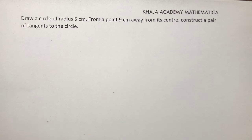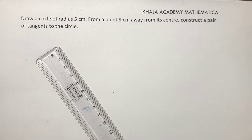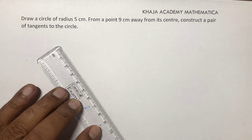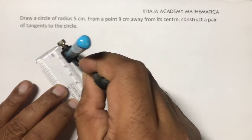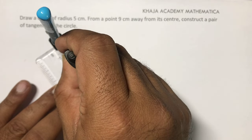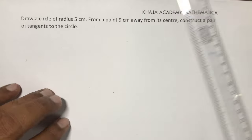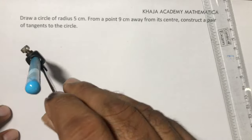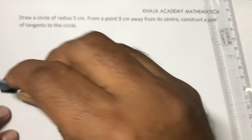Draw a circle of radius 5 centimeters. From a point 9 centimeters away from its center, construct a pair of tangents to the circle. So draw a circle of radius 5 centimeters. Measure 5 centimeters with the help of a compass and draw a circle of radius 5 centimeters.